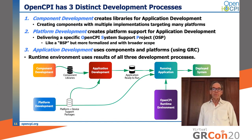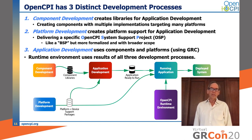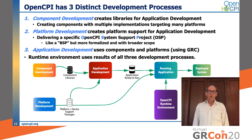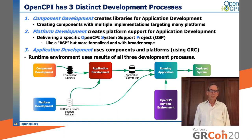Now we'll describe OpenCPI in more detail by describing the three distinct development processes it supports. The first, component development, creates the libraries of components for applications to use. The second, platform development, creates the support packages for new hardware. And the third, application development, uses the results of the first two to create and deploy SDR applications.